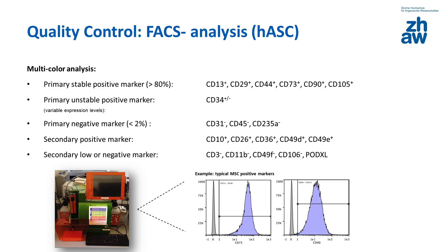In addition to the primary markers, secondary positive and negative surface markers can be used. However, the grade of expression of these secondary markers is lower than that of the primary ones.